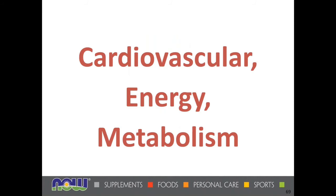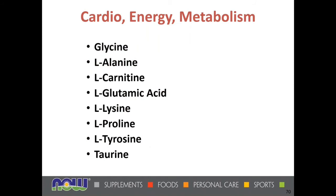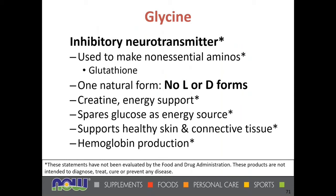Now let's talk about cardiovascular, energy, and metabolism aspects of amino acids, covering glycine, L-alanine, L-carnitine, L-glutamic acid, L-lysine, L-proline, L-tyrosine, and taurine. Glycine is an inhibitory neurotransmitter used to make non-essential amino acids such as glutathione. There is only one natural form — no L or D form. It is involved in the creation of creatine, helps in energy support, spares glucose as an energy source, supports healthy skin and connective tissue, and is involved in hemoglobin production.